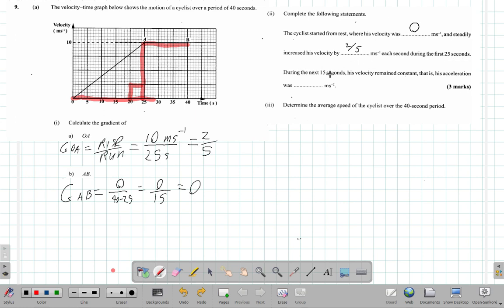During the next 15 seconds, between A and B, his velocity remained constant, so his acceleration was zero meters per second squared. Part three: determine the average speed of the cyclist over the 40-second period.